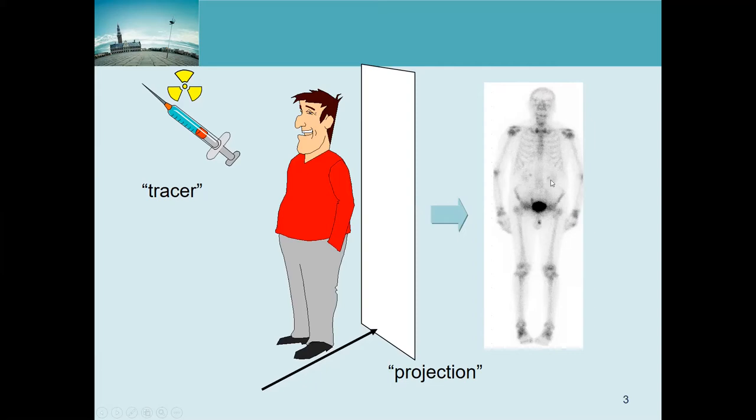And for example, if you inject a tracer that accumulates proportional to bone metabolism, you will get an image like this.